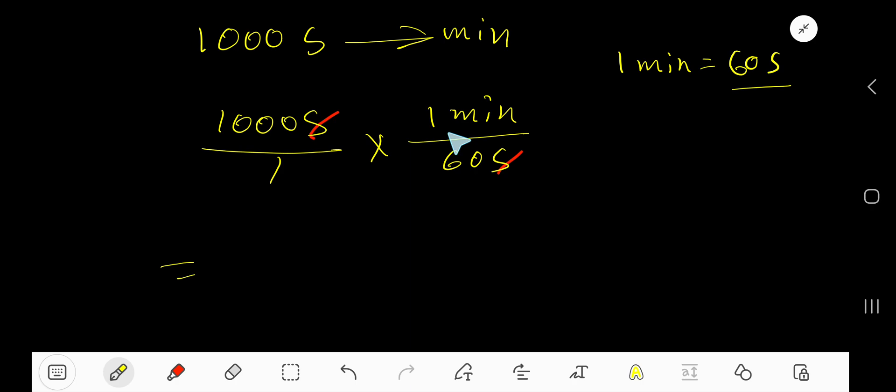Now multiply 1000 times 1, which means 1000, and 1 times 60 means 60 minutes.